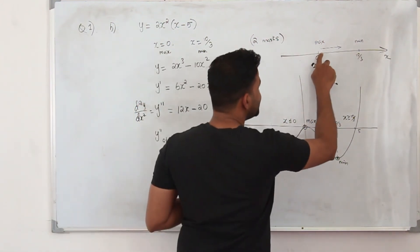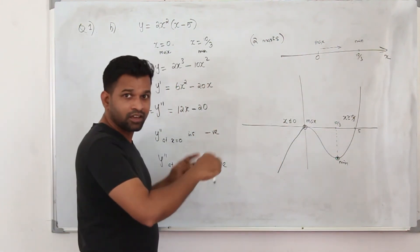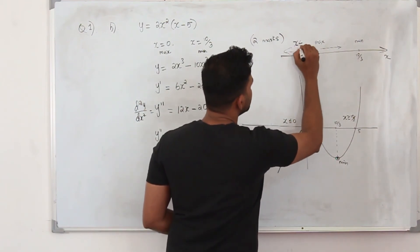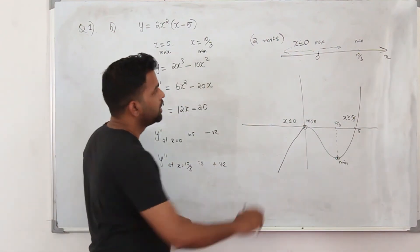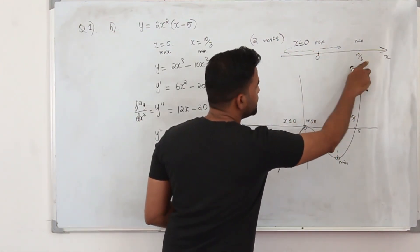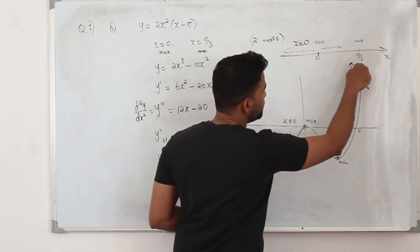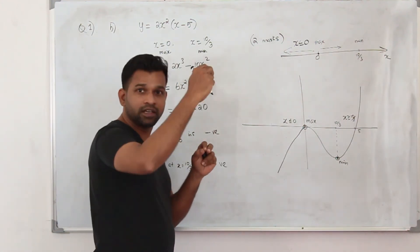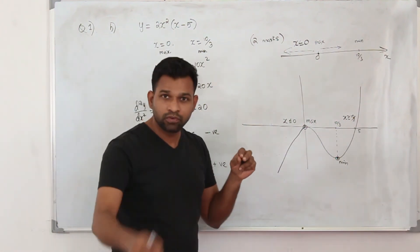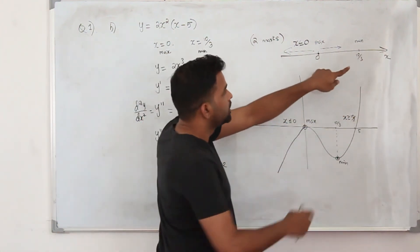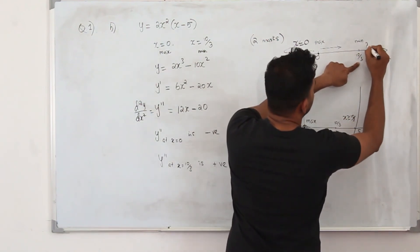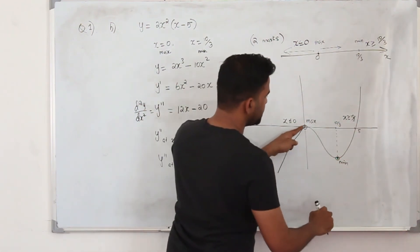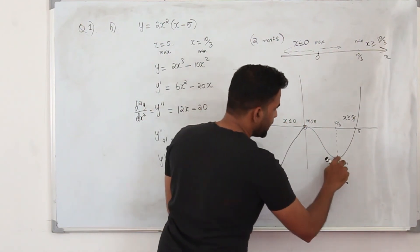If x equals 0 is a maximum point, the function must be increasing leading up to it, so for all values less than or equal to 0 the function is increasing. From 0 to 10/3 it is decreasing. Since x equals 10/3 is a minimum and a turning point, the graph must go up after this — so for x greater than or equal to 10/3 the function is increasing again. The solution is: x ≤ 0 or x ≥ 10/3.